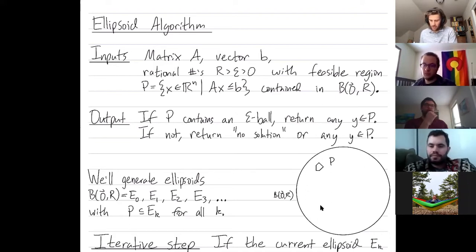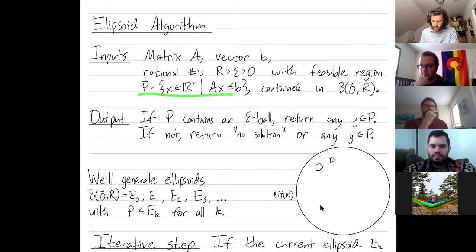So our inputs to the ellipsoid algorithm are a matrix, capital A, and a vector B, and we're trying to decide if this feasible region contains an epsilon ball or not.